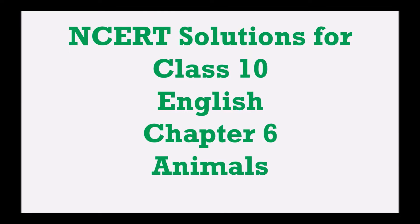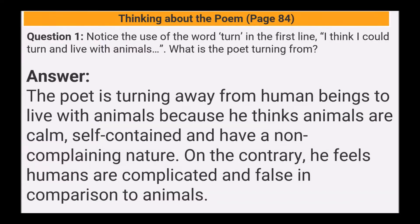Today we will see a video related to the NCERT solution for Class 10th English, Chapter 6 — that is, the poem 'Animals'. So let's solve the textbook exercise: Thinking About the Poem, on page number 84. Notice the use of the word 'turn' in the first line: 'I think I could turn and live with animals.'